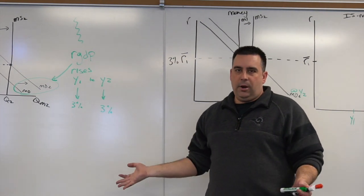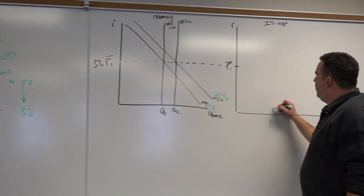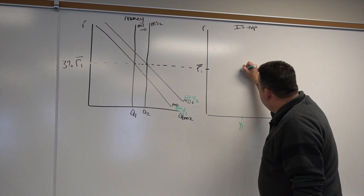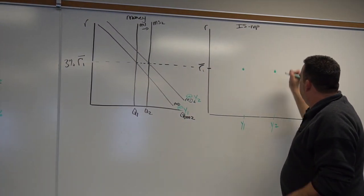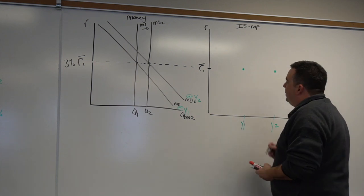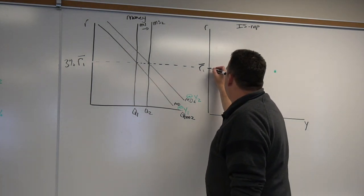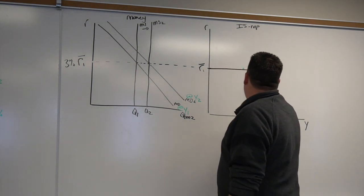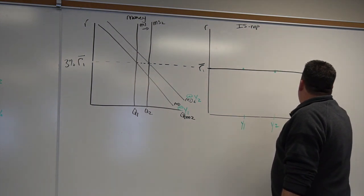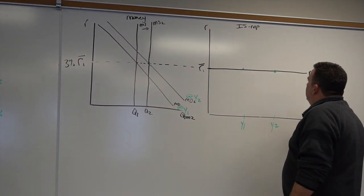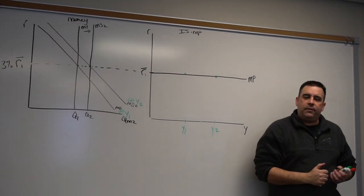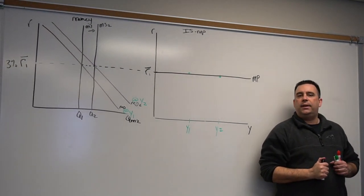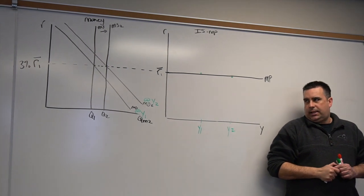Those are ordered pair combinations. Y1 occurred at 3%, Y2 occurred at 3%. And again, if you connect those points, you get a MP function that is horizontal at whatever the targeted interest rate is. I'll say it again: you get an MP function that is horizontal at whatever the targeted interest rate is.